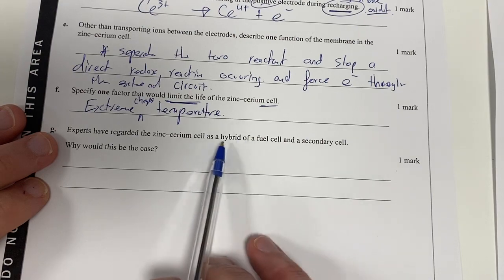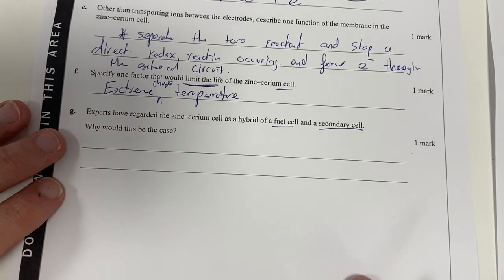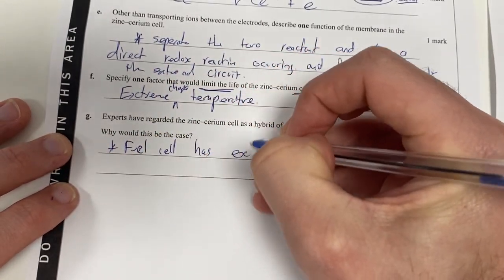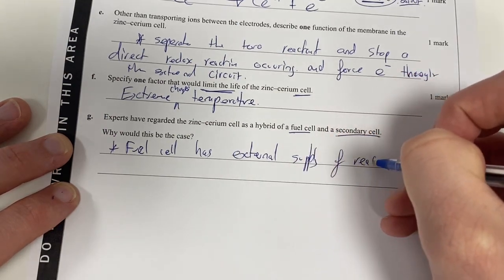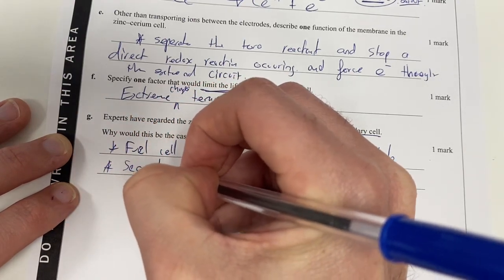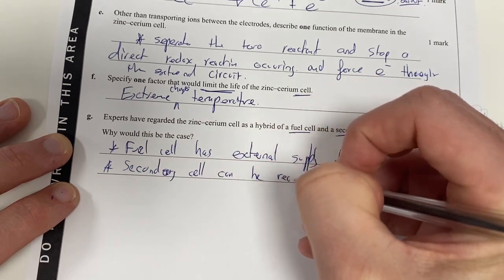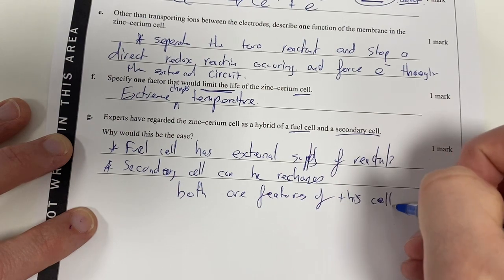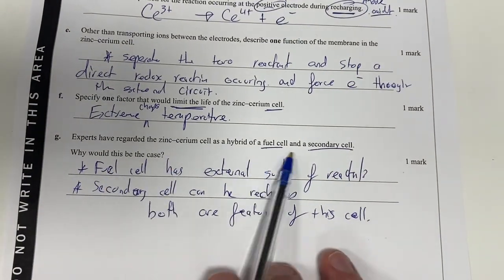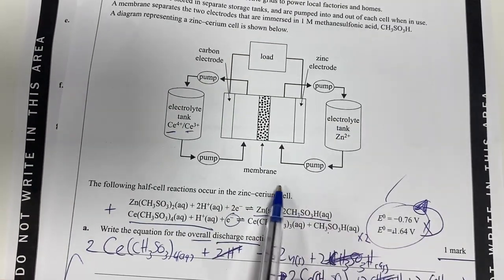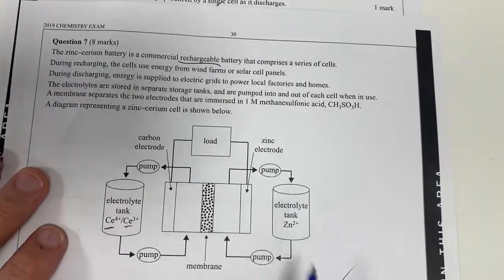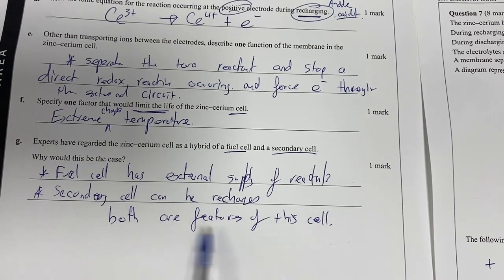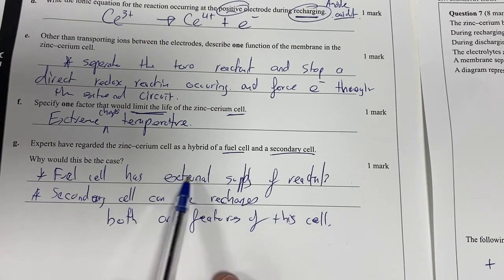Experts have regarded the cell as a hybrid between fuel and secondary cells. Why will this be the case? This question screens out just what do these two things mean? So let's define them. A fuel cell has external supply of reactants and secondary cell can be recharged. Both are features of this cell. Basically if we have to explain something, let's define it first and then try and link it to our question. And yes, this definitely has external things. As soon as I saw this question I started thinking fuel cell, and then when it said rechargeable I said secondary as well. Defining the two things and then explaining that both are the features of this cell, saying what fuel cell means, what a secondary cell means, and you should be right.